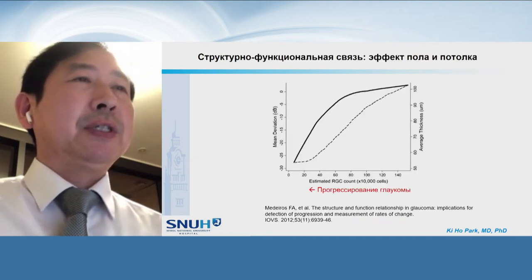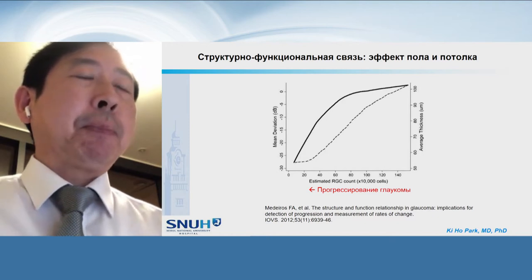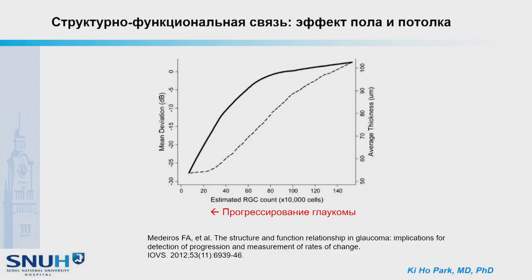This figure is a modified graph from Medeiros' paper from UCSD. The y-axis is mean deviation and the x-axis is glaucoma progression, with left direction representing progression. In the early stage of glaucoma, the visual field change is very slow — we call this the ceiling effect. In contrast, in RNFL thickness, the progression rate is very fast in the early stage, while in the very end stage of advanced glaucoma, the rate of change is very slow — we call that the floor effect.